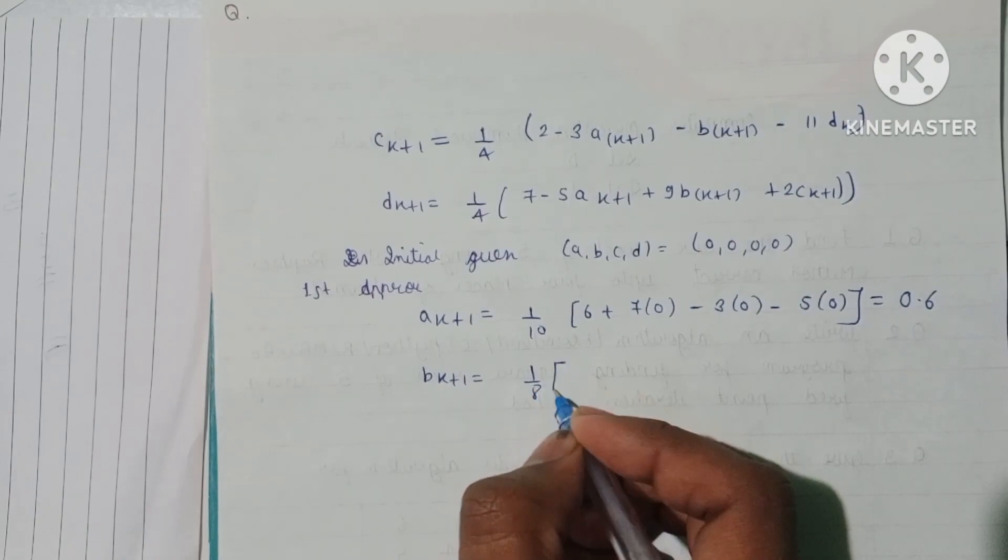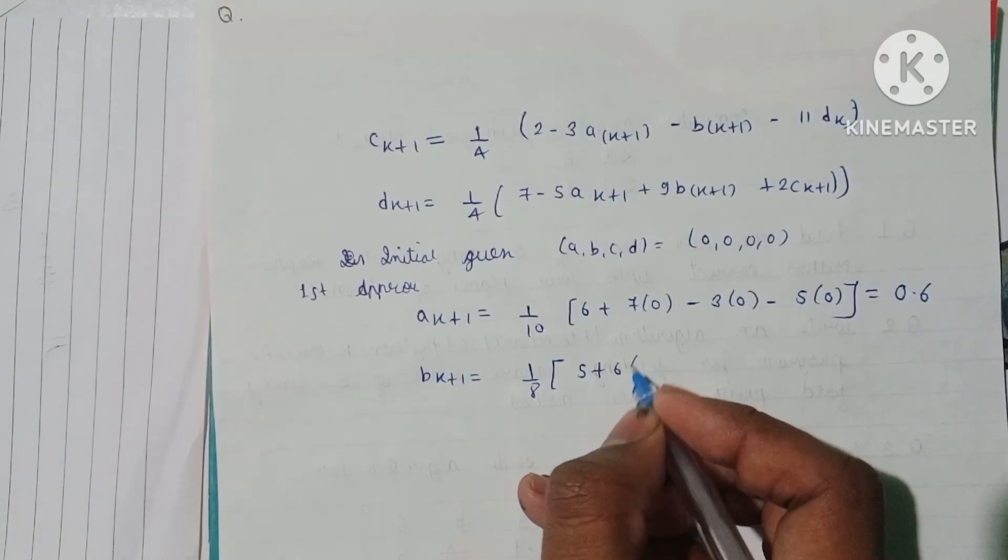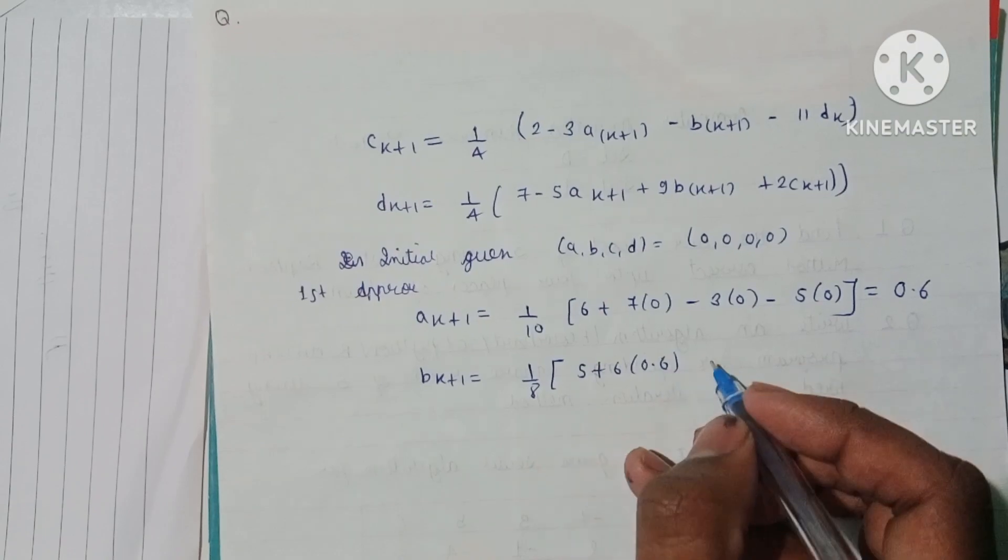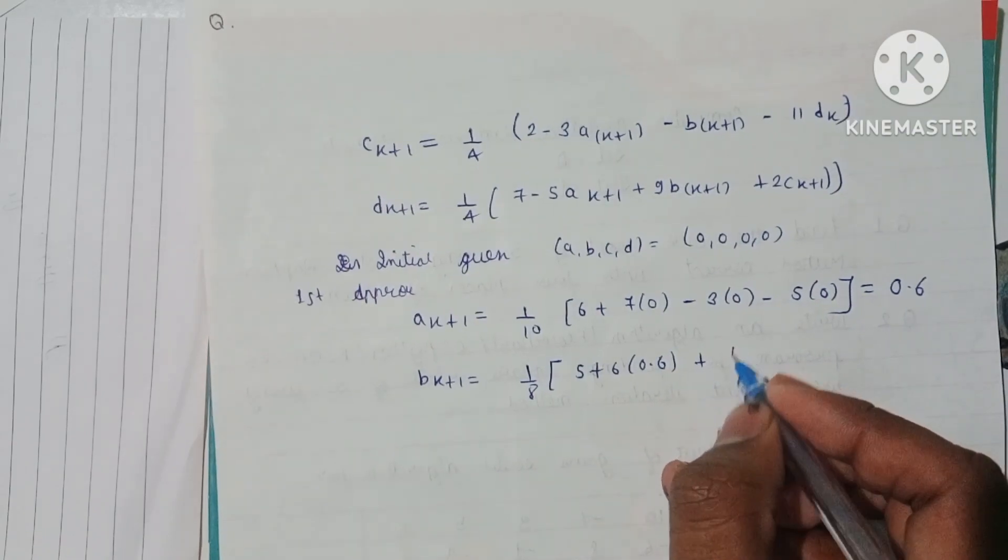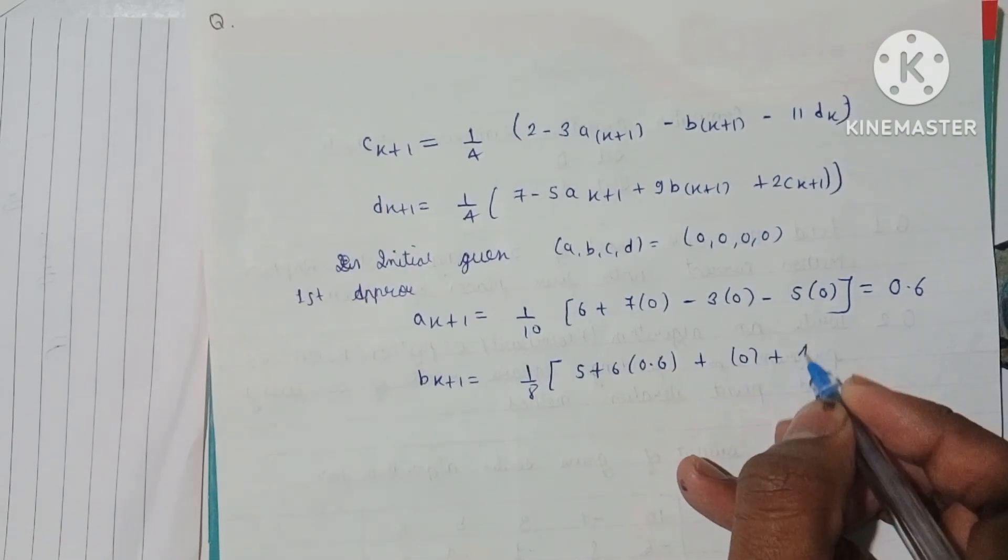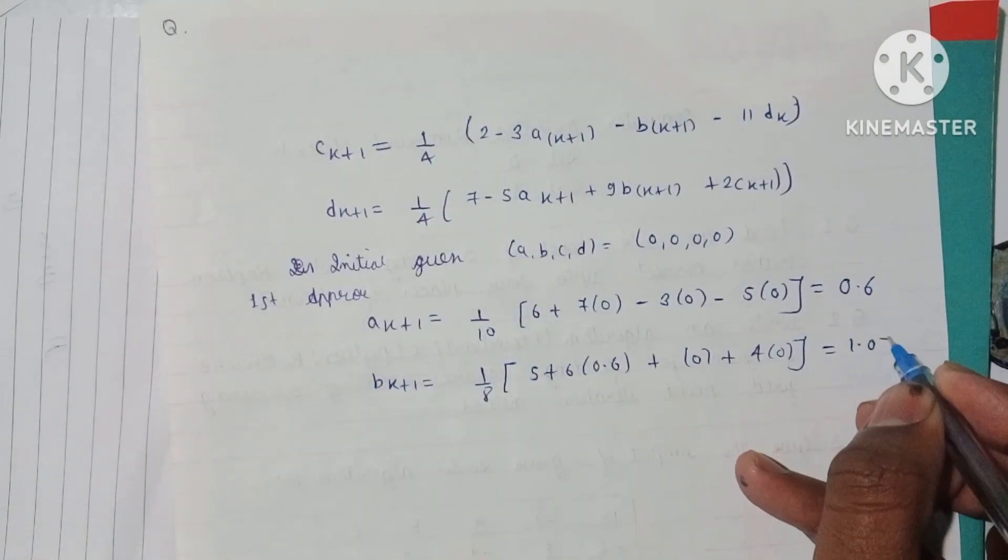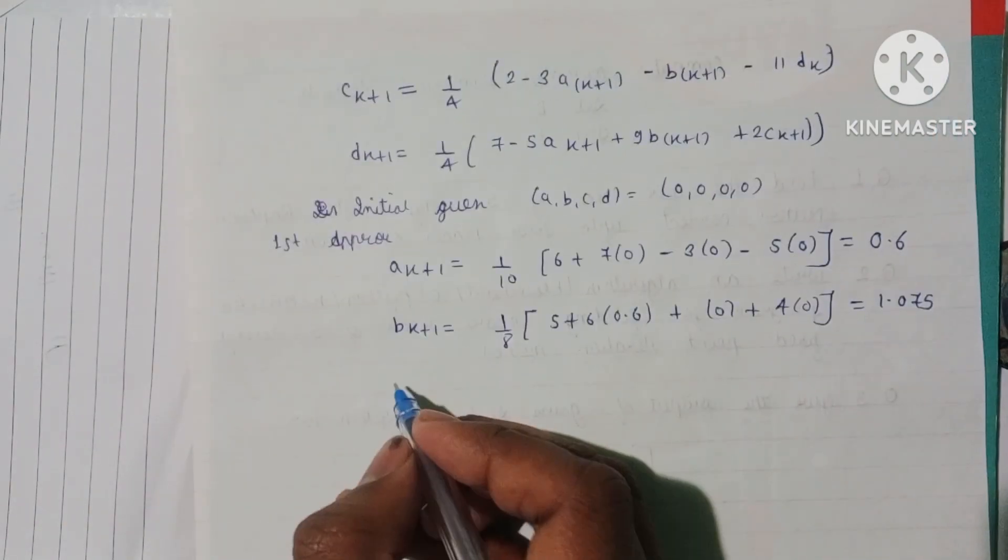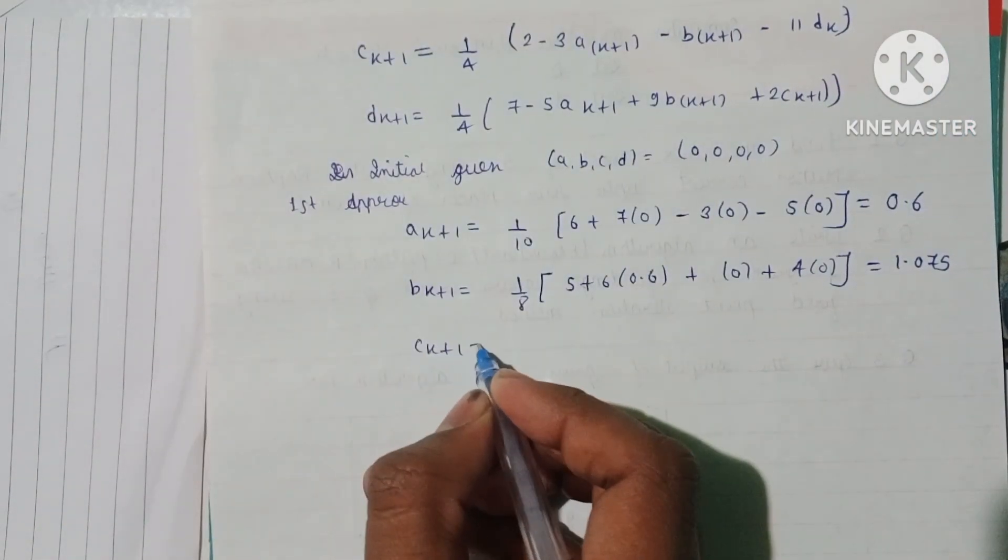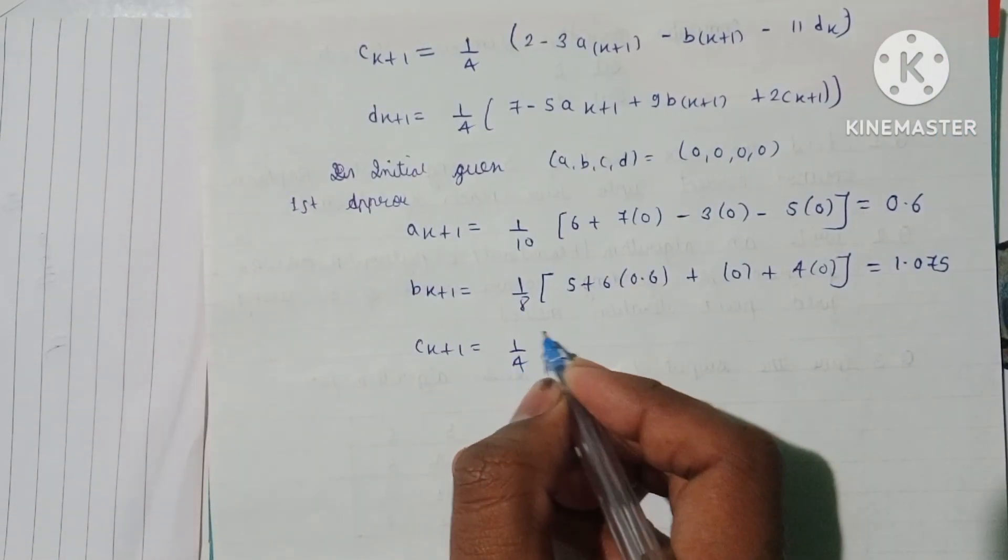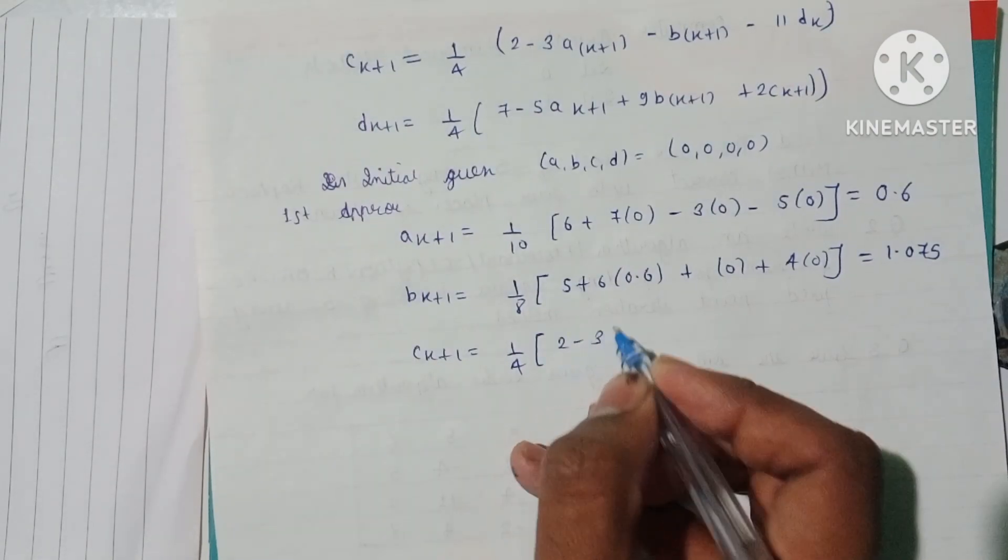Now B(k+1), we have the current value of A as 0.6, so this is 1/8 times (5 + 6 times 0.6), which gives B(k+1) equals 1.075.